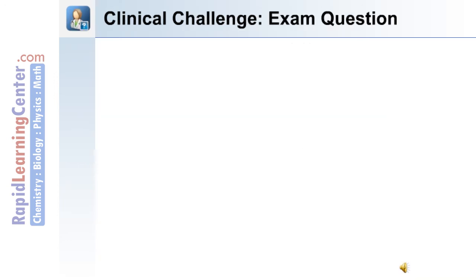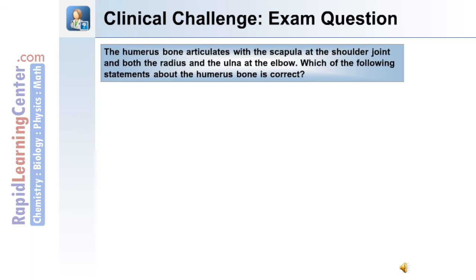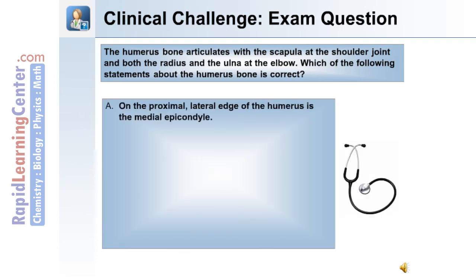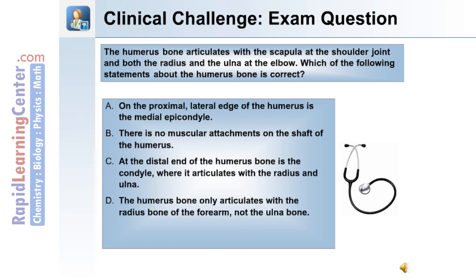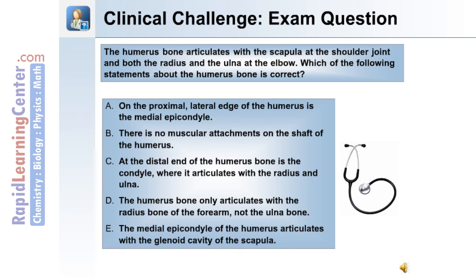Here's a clinical challenge exam question. The humerus bone articulates with the scapula at the shoulder joint, and both the radius and ulna at the elbow joint. Which of the following statements about the humerus bone is correct? A: On the proximal lateral edge of the humerus is the medial epicondyle. B: There are no muscular attachments on the shaft of the humerus. C: At the distal end of the humerus bone is the condyle where it articulates with the radius and the ulna. D: The humerus bone only articulates with the radius bone of the forearm, not the ulna bone. Or E: The medial epicondyle of the humerus articulates with the glenoid cavity of the scapula.